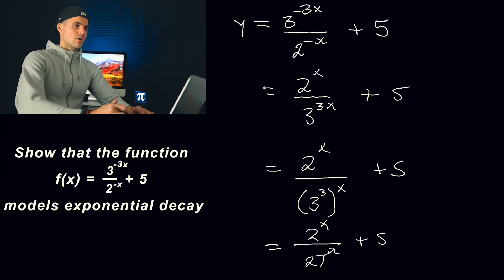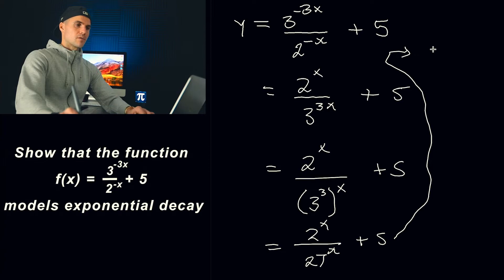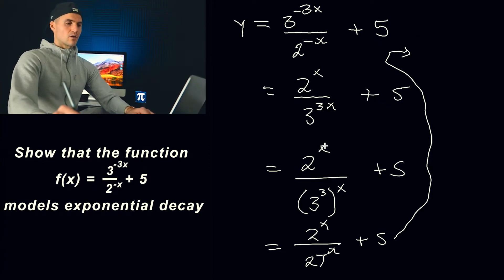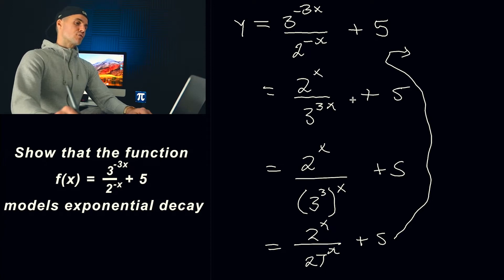all right so so far let's save this actually you know what I'll just keep writing this up here I think I got enough room so we got 2 to the power of x over 27 to the power of x plus 5 that's the exact same as the original function we're just rewriting it so from here what we can do